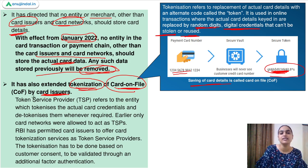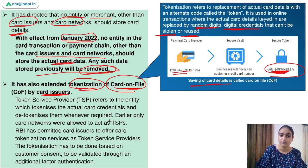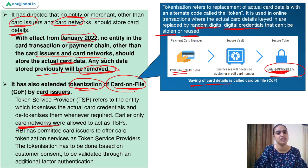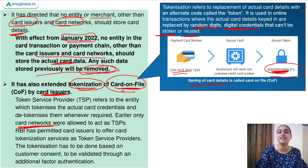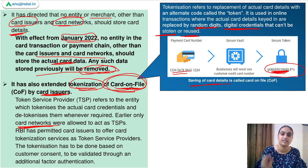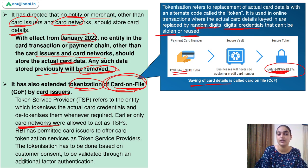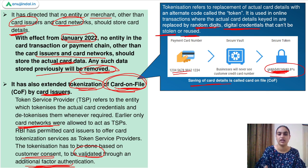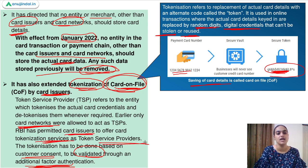RBI has extended tokenization service to card issuers. Previously, only card networks were allowed to act as token service providers. Now, RBI has permitted card issuers to offer card tokenization service as token service providers as well. Card issuers can now convert card numbers and details into random codes, tokenize them, and even store the data in that tokenized form. The tokenization must be done with customer consent and through an additional factor of authentication that needs to be validated.